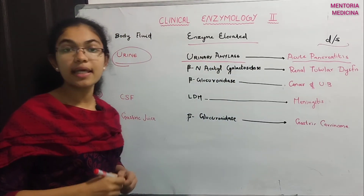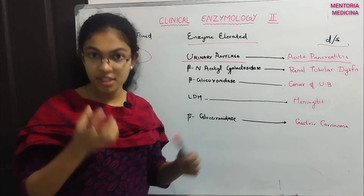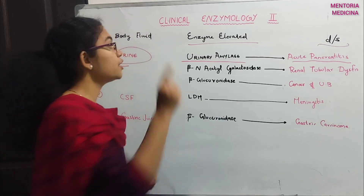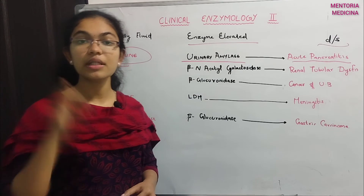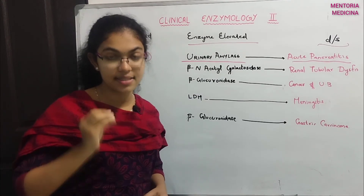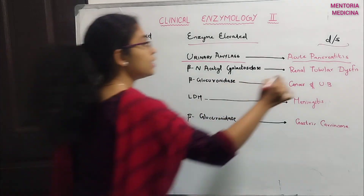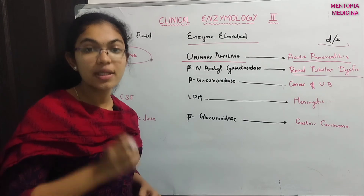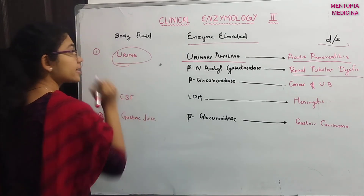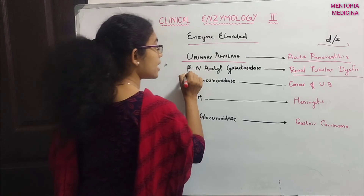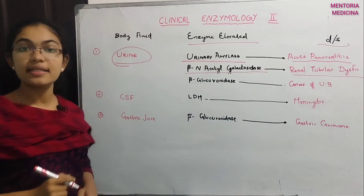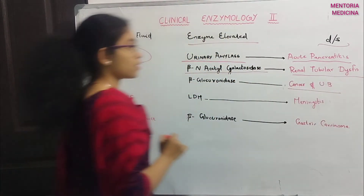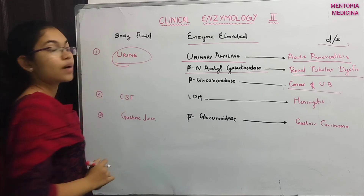For acute pancreatitis, we estimate urinary amylase. For renal tubular disease or dysfunction, a urinary test is performed using beta-N-acetyl galactosidase. For urinary bladder cancer, a urinary test is performed to assess enzyme levels.